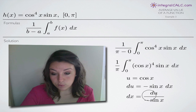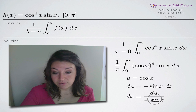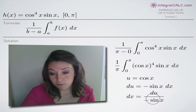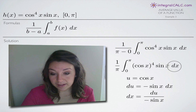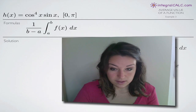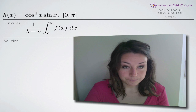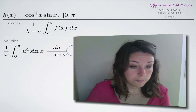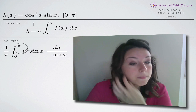We're going to solve for dx by dividing both sides by negative sin of x, giving us dx equal to du divided by negative sin of x. Now we'll put du over negative sin of x in for dx and u for cos of x, and hopefully that will allow us to simplify the integral.